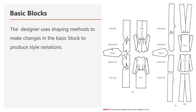Looking at this figure, you can see the basic block for a women's dress and a men's suit. For the women's dress, the basic blocks include the skirt front and back, bodice front and back, and one sleeve for both sides. For the men's suit, you see the pants back and front, the jacket back and front, and the sleeve pattern.